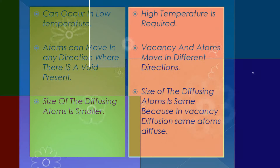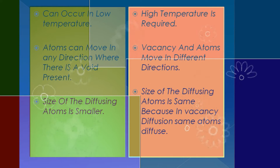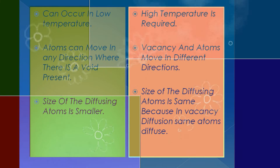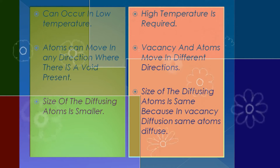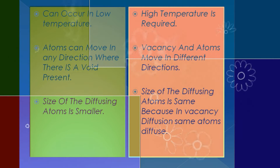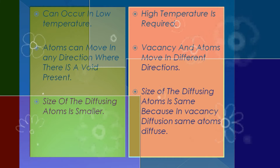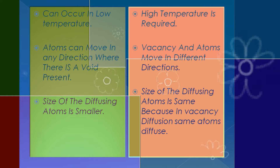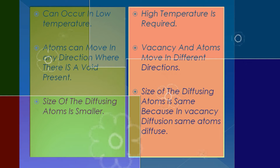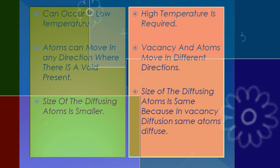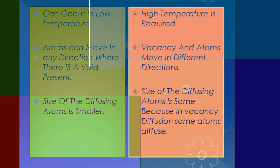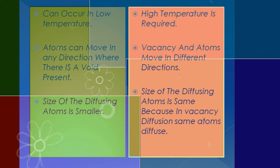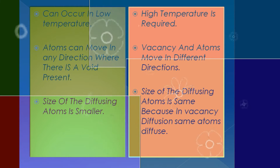In interstitial diffusion, atoms can move in any direction where there is a void present — they can move anywhere. But in vacancy diffusion, this doesn't happen. In vacancy diffusion, only one vacancy is available adjacent to the atom, so the atom can only move to that specific vacancy.